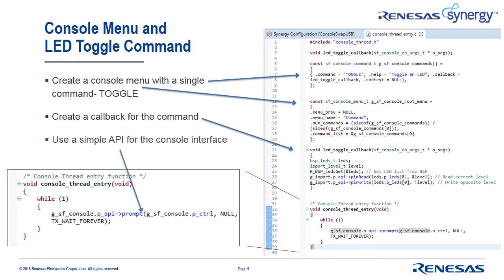The API for the console framework is a single line, shown in the blowup in the bottom left. The prompt waits for the command and processes it as directed by the previously shown menu and command list. Note that this call is completely independent of a particular hardware implementation.